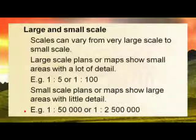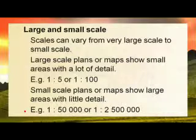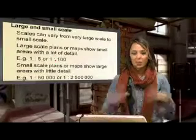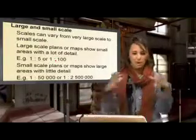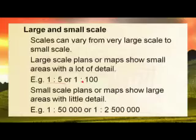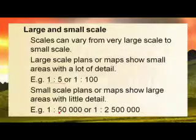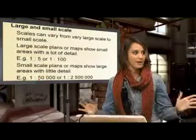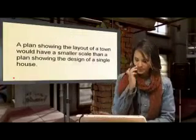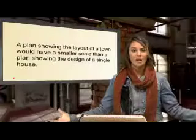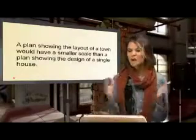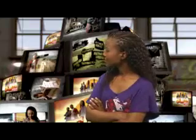Scales can vary from large scales to small scales. Large scale maps show small areas with a lot of detail — for example, 1 to 5 or 1 to 100 — because one centimetre on the map is just five or 100 centimetres in reality. Small scale maps show large areas with less detail, such as 1 to 50,000 or 1 to 2,500,000 — leaving out a lot of detail and just showing vast areas of land. A plan showing the layout of a town would have a smaller scale than a plan showing the design of a single house, because the town is larger and you can't show all the trees and details.